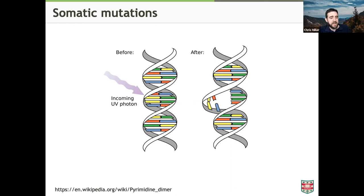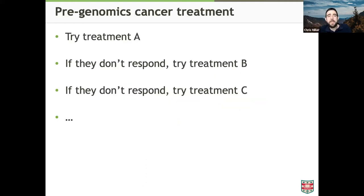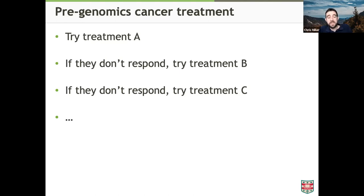To frame why we care about these variants, think about how we're applying it to cancer. It helps to take a step back and think about what cancer treatment was like in a pre-genomics era. Where we don't have good targeted treatments, you go in, you're diagnosed, somebody looks at cells under a microscope, maybe does some pathology or an antibody test to check for overexpression of a gene or protein, and then they go off their list of possible therapies and choose one.